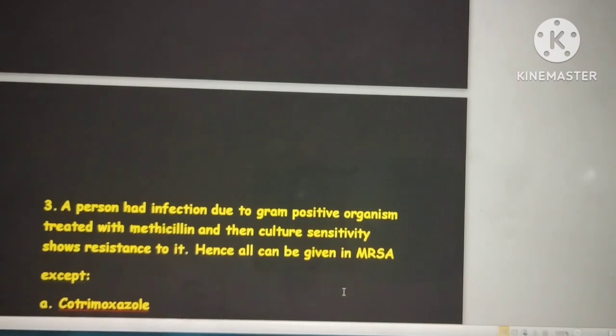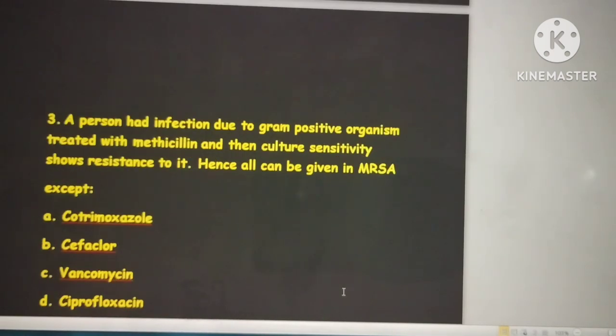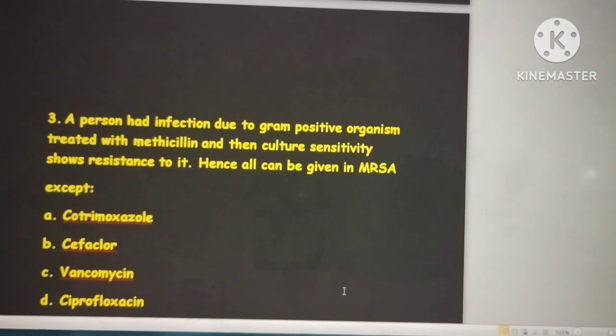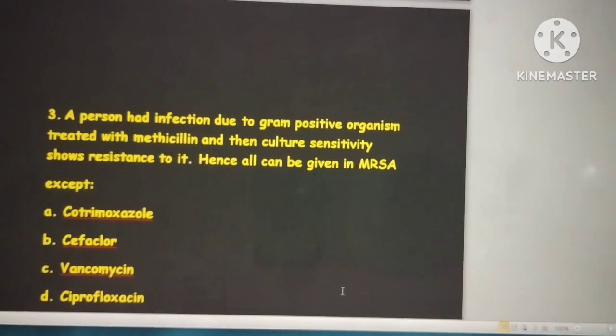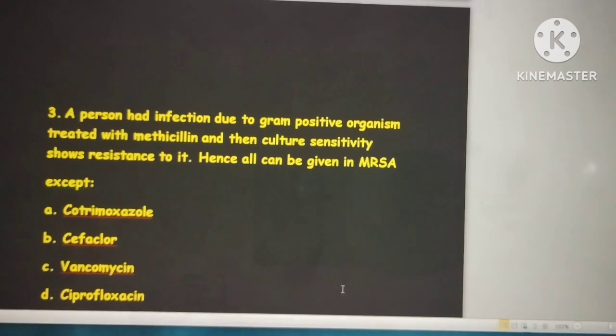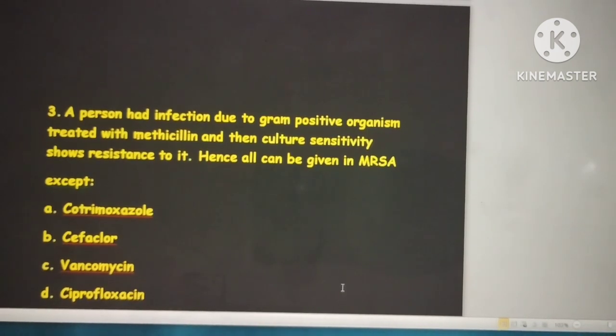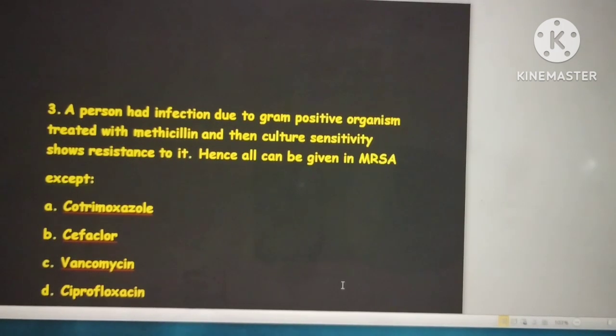Next question: A person had infection due to gram positive organism treated with methicillin, and culture sensitivity shows resistance to it. Hence all can be given in MRSA except. If culture shows resistance to methicillin, it's called methicillin resistant Staphylococcus aureus. The gram positive organism is Staphylococcus aureus.